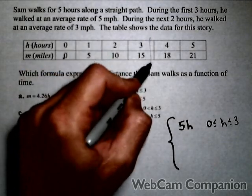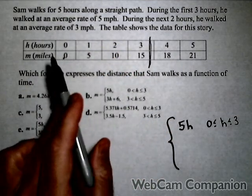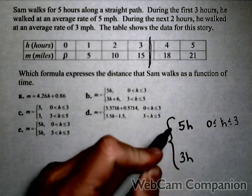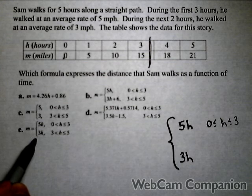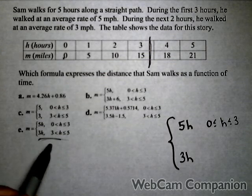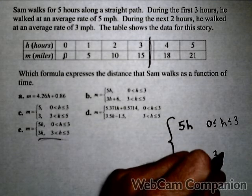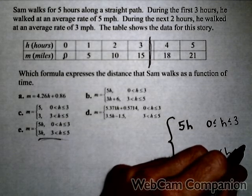Now, that covers the first three hours, so we're right here, and now we need the last two hours. Well, now he's going average rate of three miles per hour, so that'll be 3h. Now, here's where we have to be a little bit careful, because it might be tempting to pick e here. Remember, this is happening between three hours and five hours.